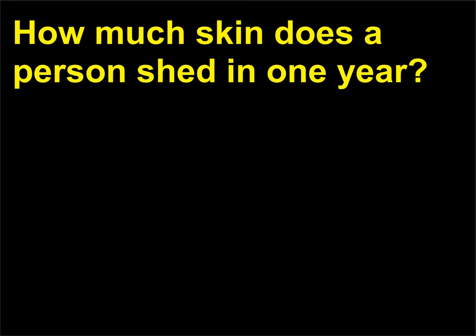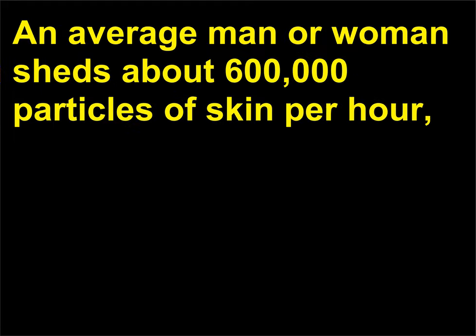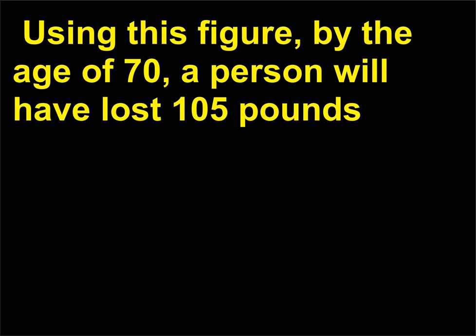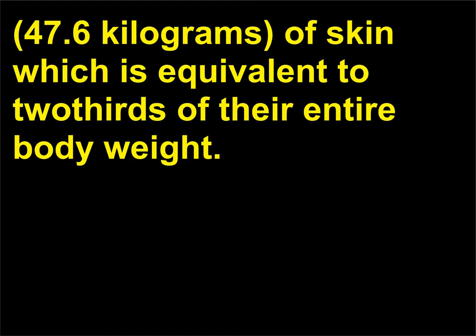How much skin does a person shed in one year? An average man or woman sheds about 600,000 particles of skin per hour, which is approximately 1.5 pounds (680 grams) per year. Using this figure, by the age of 70 a person will have lost 105 pounds (47.6 kilograms) of skin, which is equivalent to two-thirds of their entire body weight.